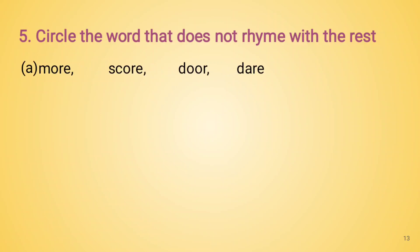First set: more, score, door, dare. Here the word dare has a different sound, whereas the words more, score, and door have a similar sound. So we will circle the word dare. More, score, and door are the rhyming words, but the word dare is not a rhyming word with the remaining words.